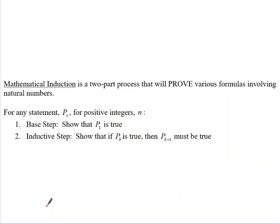Mathematical induction involves two steps to prove various formulas involving natural numbers, and frequently has to do with sequences. For any statement p(n) for positive integers n, you have two steps. In the base step you show that p(1) is true — you show that your statement is true for the smallest case, in our case when n is 1. Then you do the inductive step where you show that if p(k) is true then p(k+1) is also true.